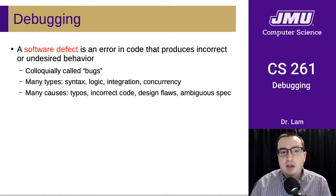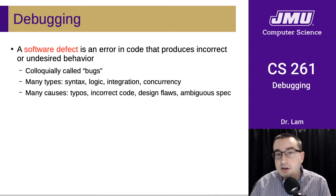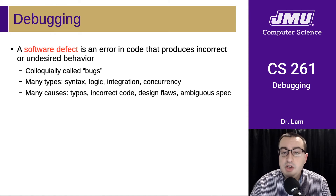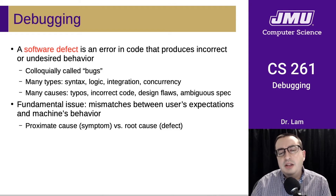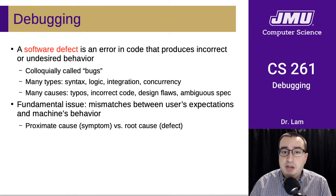A software defect is an error in the code that produces incorrect or undesirable behavior — we colloquially call these bugs. There are many different kinds: syntax defects, logic defects, integration defects, concurrency defects. There are many causes — maybe you made a typo, maybe there's a design flaw, or maybe the spec itself was ambiguous. But in all of these cases, the most useful way to think about it is that there is a mismatch between your expectation of what your program is doing and what is actually happening on the machine.